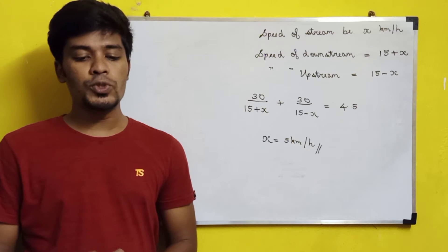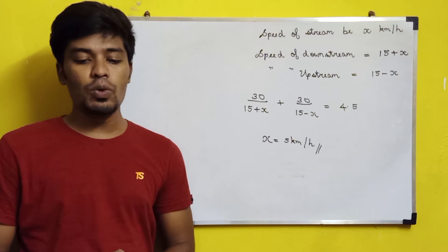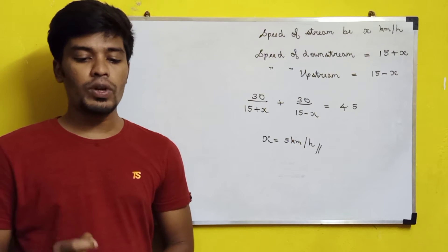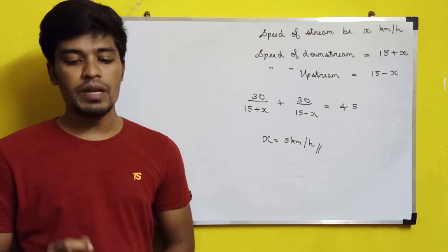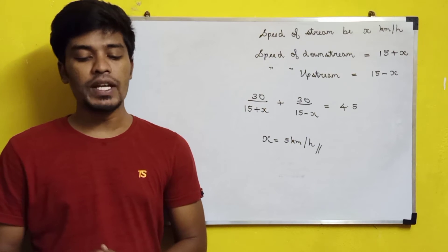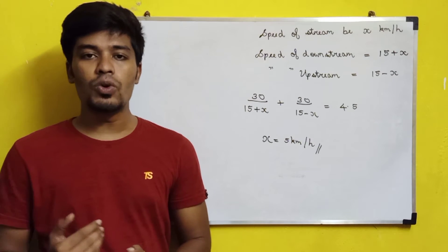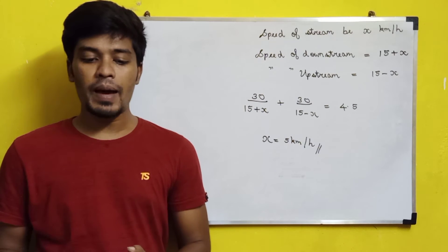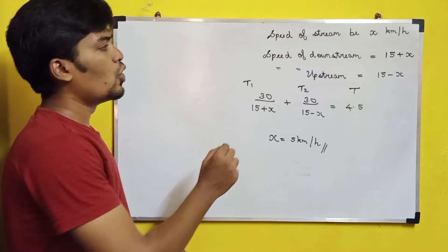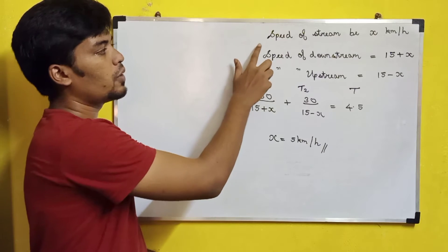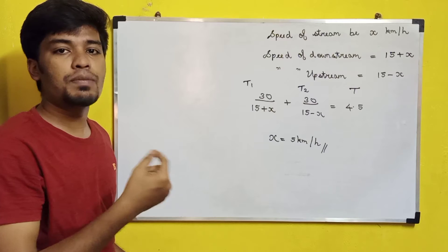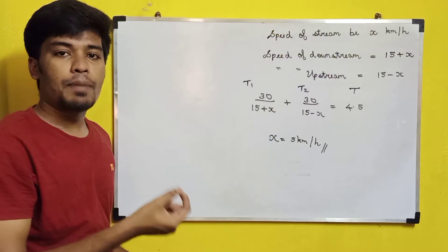The second question is: a boat whose speed is 15 km per hour in still water goes 30 km downstream and then comes back in a total of 4 hours and 30 minutes. Find the speed of the stream in km per hour. The speed of the boat in still water is 15 km per hour. The boat travels 30 km downstream and returns in 4.5 hours total. We assume the speed of the stream to be x km per hour, and we need to find the upstream and downstream speeds.